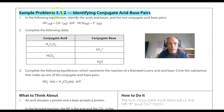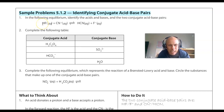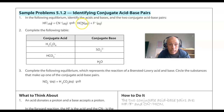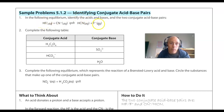We're looking at sample problem 5.1.2 on page 267. Question 1 says: in the following equilibrium, identify the acids and bases and the two conjugate acid-base pairs. HF is the acid because it's losing the hydrogen ion, and CN⁻ is the base because it's gaining the hydrogen ion. On the product side, HCN has one more proton than CN⁻ — this is our first conjugate acid-base pair; HCN is the conjugate acid, CN⁻ is the conjugate base. When HF loses that hydrogen ion it forms F⁻ — that's our second conjugate pair; F⁻ is the conjugate base, HF is the conjugate acid.